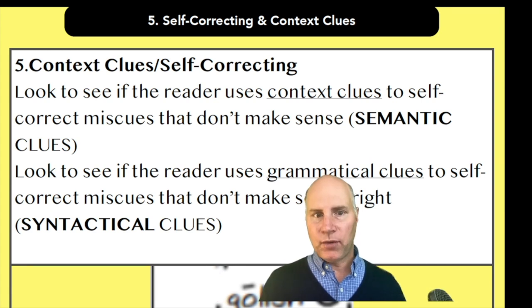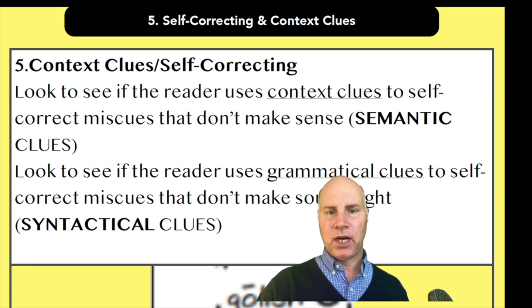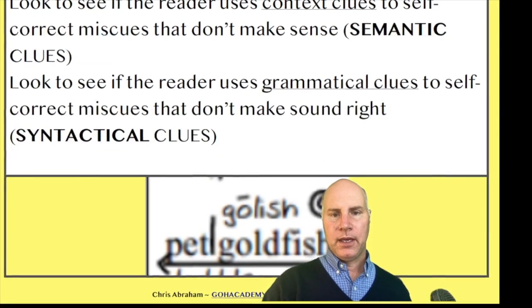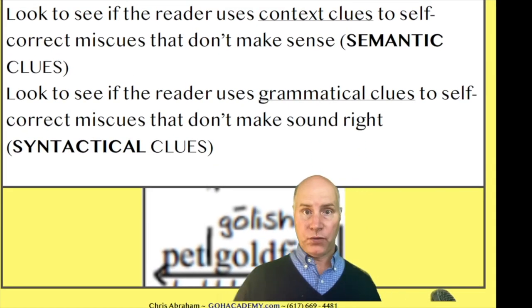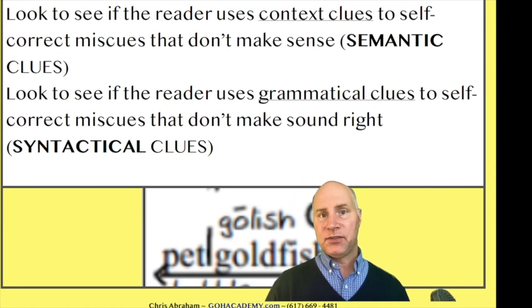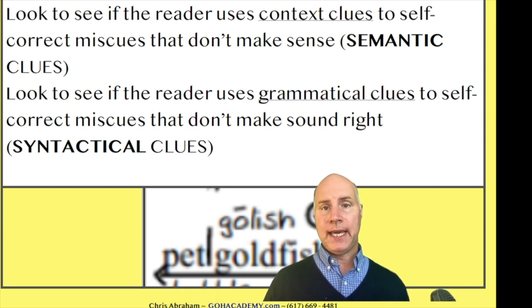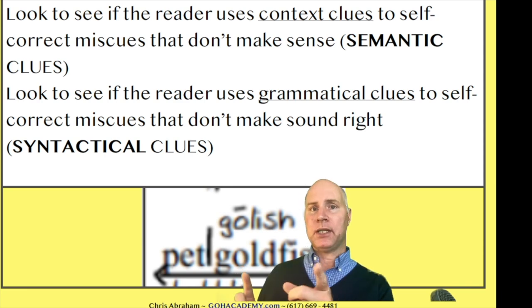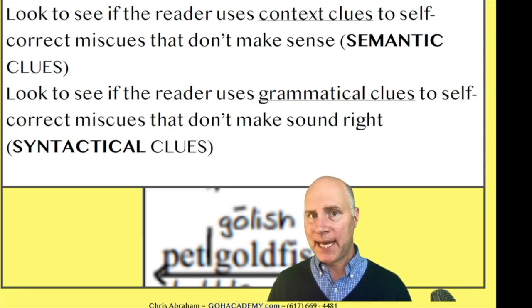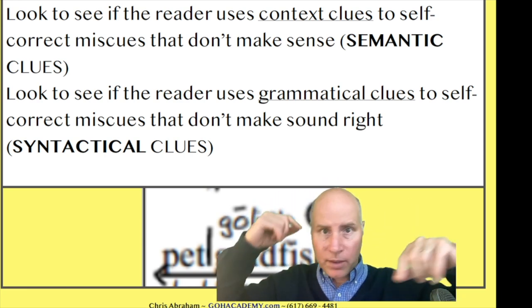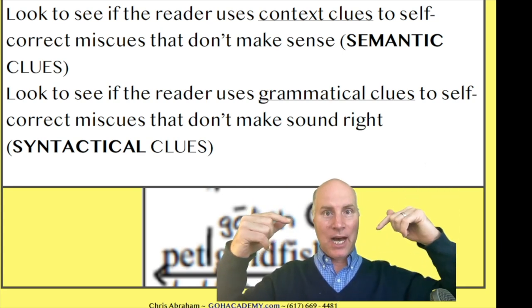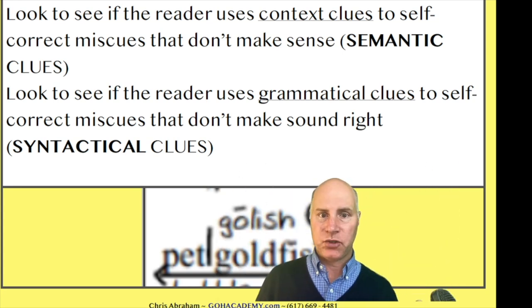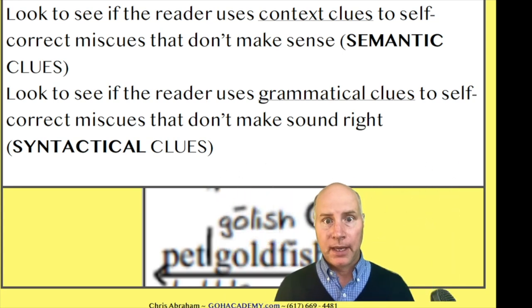When you see a student self-correct, it means they come across a word. Like in this picture here, they have this sentence: pet goldfish. Instead of saying pet goldfish, they pause. You see that line that says they pause. Every time you see a pause, it means they're not sure what that is, and they're going through in their brain rapidly many different word identification strategies.